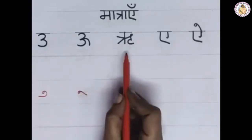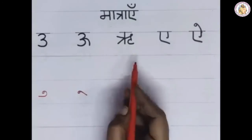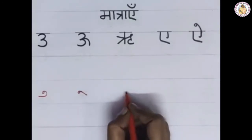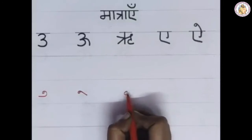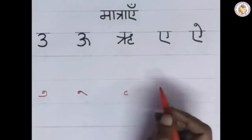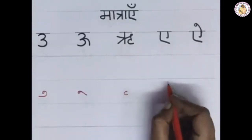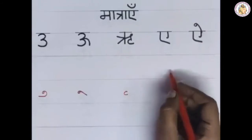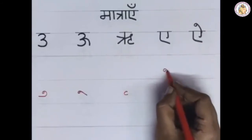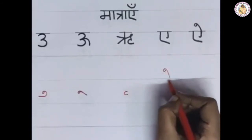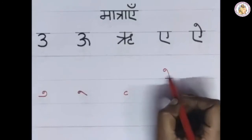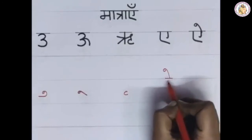Next letter is 'Ri'. Below the vyanjan, draw like the English alphabet C. This is the 'Ri' Matra. Next is 'ae'. On the top of the vyanjan, draw one slanting line by touching the top of the vyanjan. This is the 'ae' Matra.